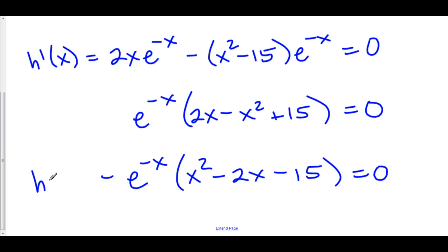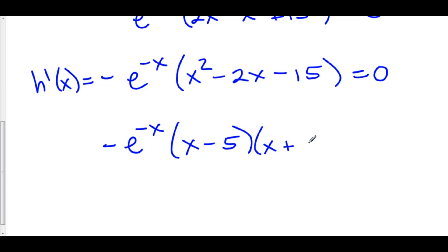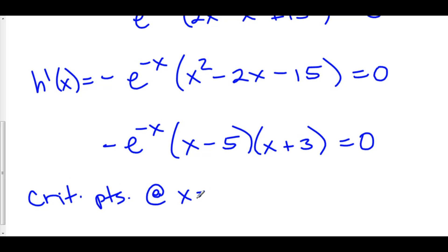This is h prime of x. Now e to any power is never going to equal zero — it's always positive, except as x approaches infinity where e^(-∞) approaches zero, but that's not really an issue here. We can factor the polynomial: negative e^(-x) times (x minus 5)(x plus 3), all equal to zero. So we have critical points at x equals negative 3 and at x equals 5.